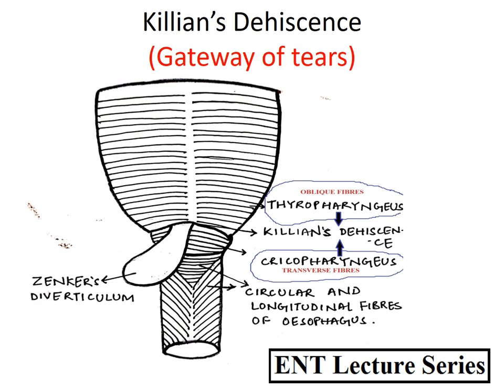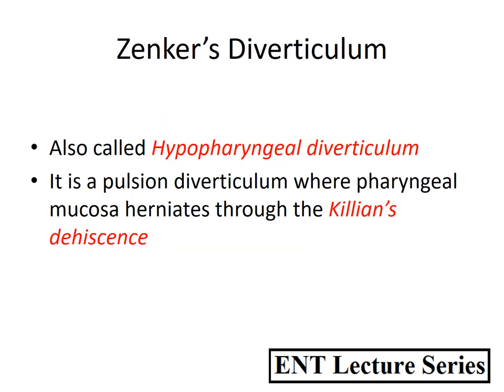Secondly, the pharyngeal mucosa can herniate through it and result in the formation of Zenker's diverticulum. Zenker's diverticulum is also called hypopharyngeal diverticulum because of its location, and it is a pulsion diverticulum where pharyngeal mucosa herniates through the Kilian's dehiscence.